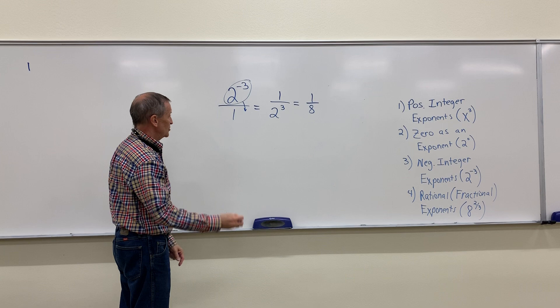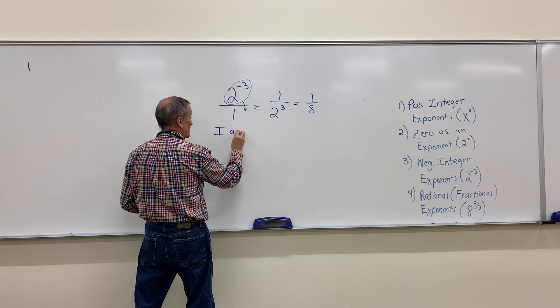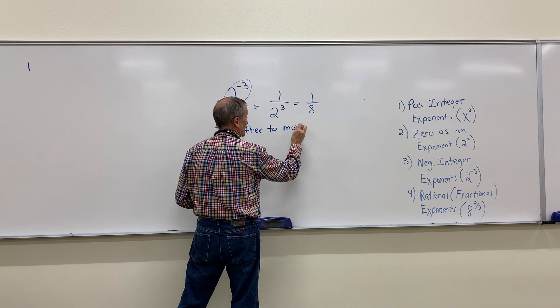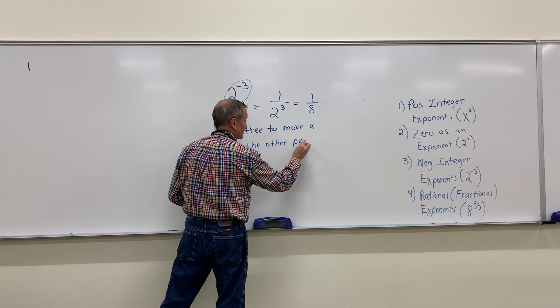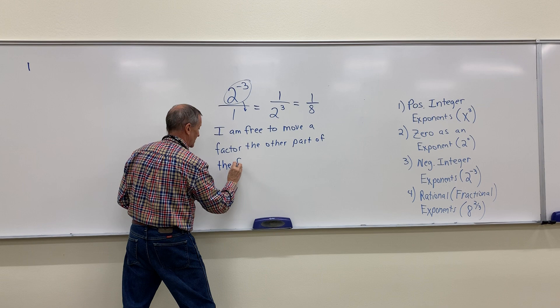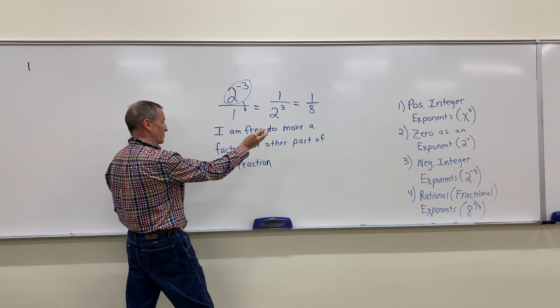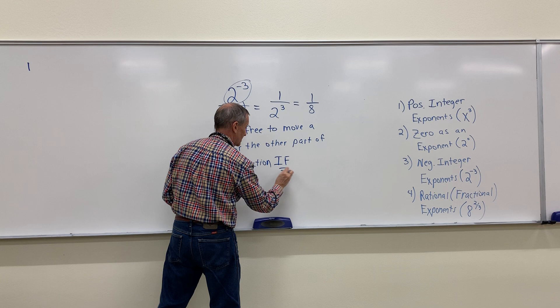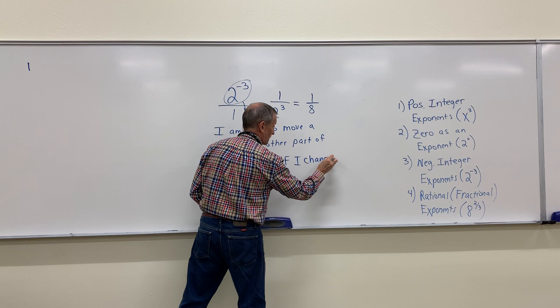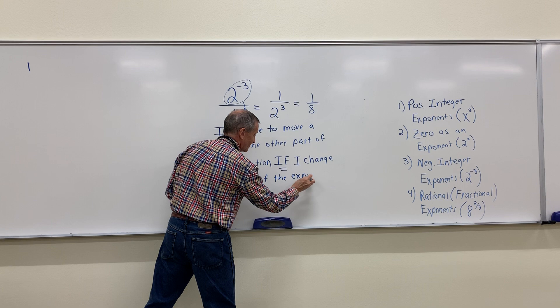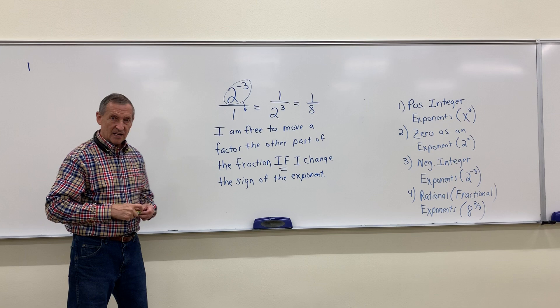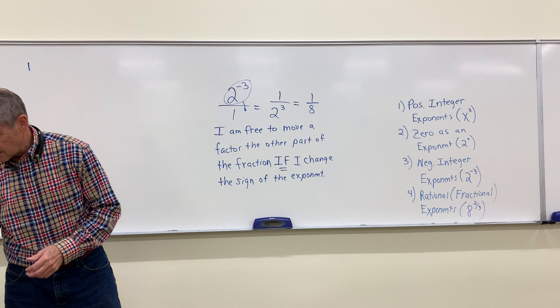Here's the key idea: I am free to move a factor to the other part of the fraction — and remember, there's always a fraction; if you don't have one, make one — as long as I change the sign of the exponent. That's a concept you can use multiple times when you are evaluating expressions that have negative exponents.